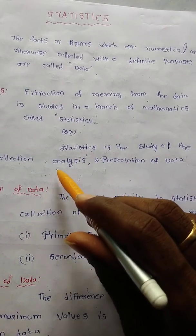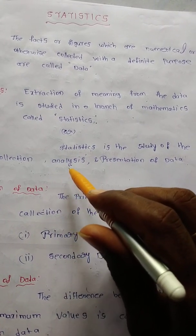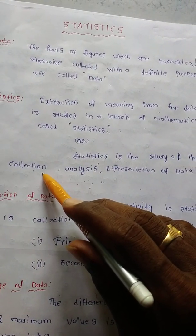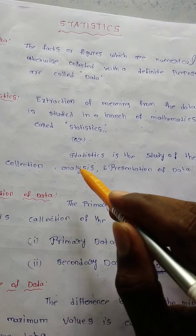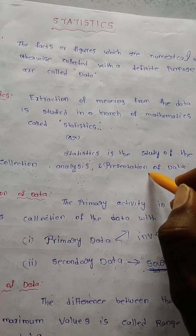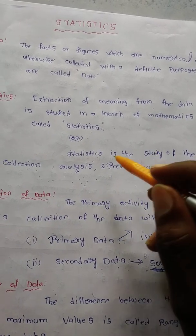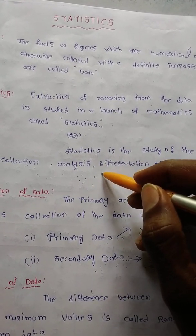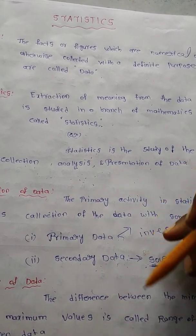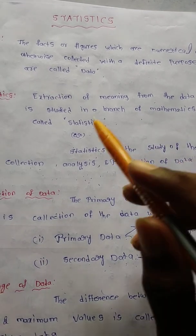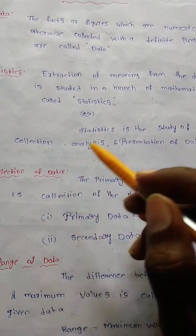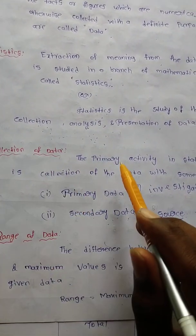A real example is the population census. In our state, the central government conducts it every 10 years. First, they collect the population data, then they do analysis, and then they present it to the government. From that only, we can say directly which state has the highest population and which state has the lowest population, based on the collection of data. The collection of data is the primary activity.